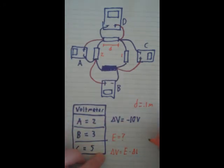So, it's just going to be negative 10 over 0.1. And, that will give us our E. So, our E will equal negative 100 newtons per coulomb.